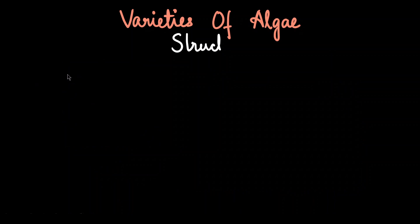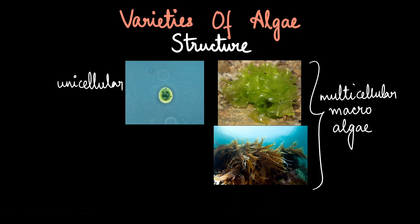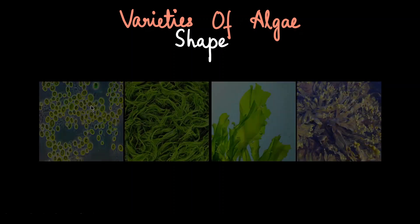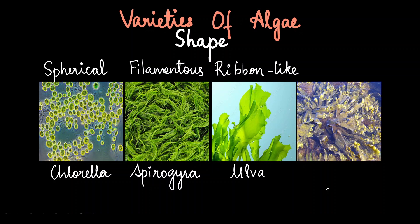Next is the structure of algae. We already saw that they exist in unicellular forms. We also have multicellular forms called macroalgae, which includes kelp and ulothrix, which look like small plants. Other than these two, algaes have a unique way of existence in the form of a colony, usually seen in unicellular algae like volvox — individual volvox exist as colonies. Algaes also show variety in their shapes: spherical (unicellular chlorella), filamentous (green alga spirogyra), ribbon-like or leaf-like (ulva), and branched algae usually seen in brown algae like fucus.